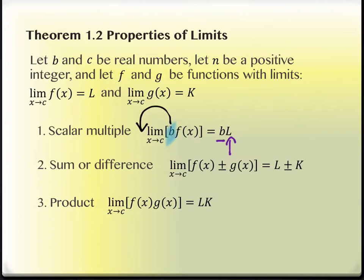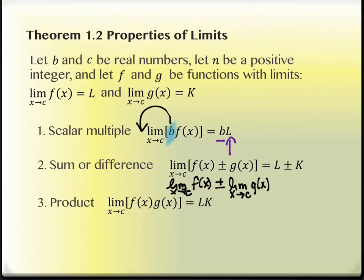Property two covers sums and differences. If we add two functions together and take the limit, it's the same as adding their individual limits. I can break the limit of F(x) plus G(x) into the limit of F(x) plus the limit of G(x). Not only that, but it works the same for products too — I can find the limit of F(x) and multiply it by the limit of G(x).